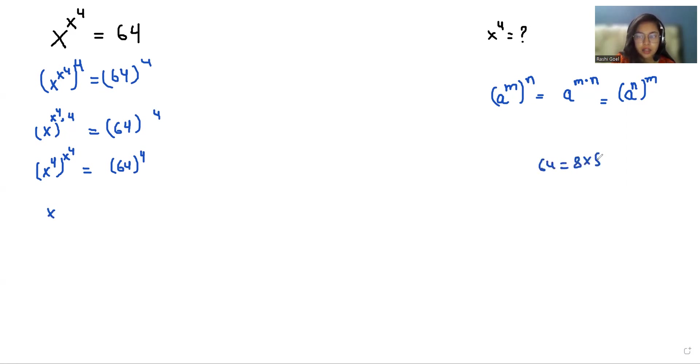Let me write, this is 64. So x to the power 4 to the power of x to the power 4 equals 8 squared to the power 4.